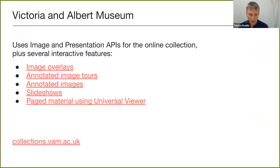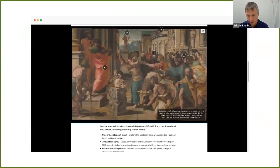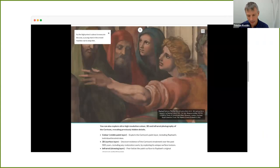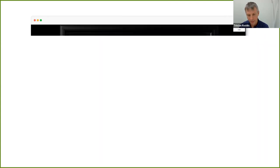For more fully featured examples, the Victoria and Albert Museum uses IIIF in lots of different ways, supporting Image and Presentation APIs for all their collection objects, as well as image overlays, annotated tours, and slideshows. Here's an example of an image overlay with hotspots — regions of interest — where clicking zooms you in and provides interpreted text, letting you move around the painting.